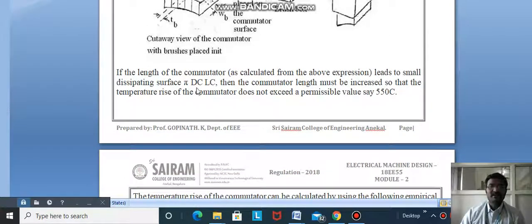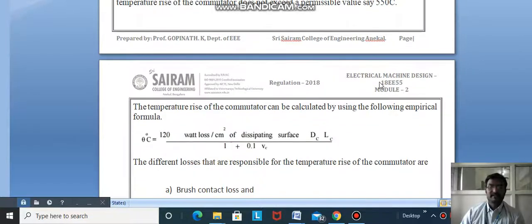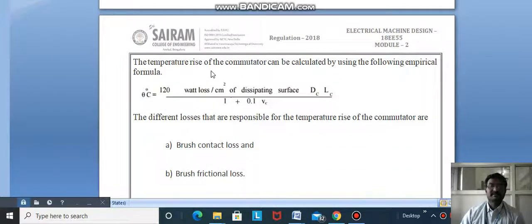If the length of commutator as calculated from the above expression leads to small dissipating surface π Dc Lc, then the commutator length must be increased so that the temperature rise does not exceed a permissible value, say 55°C.